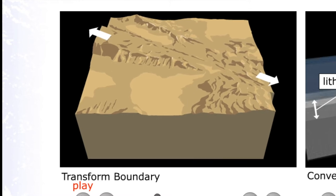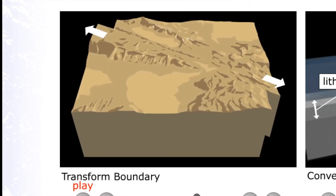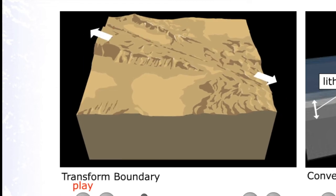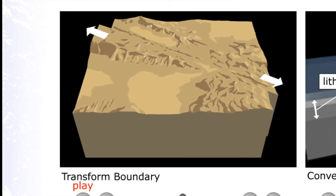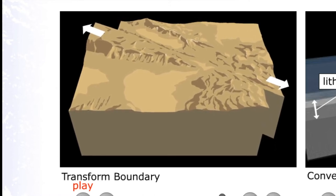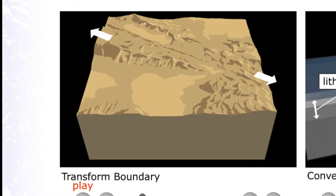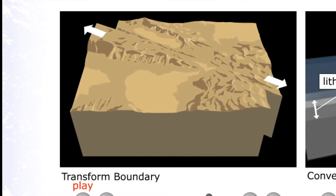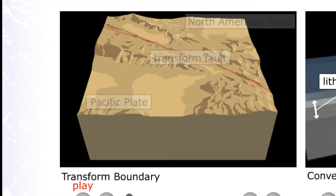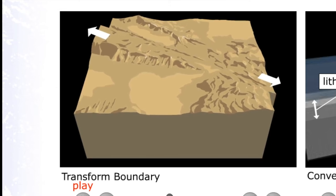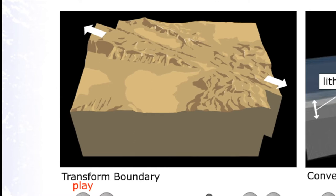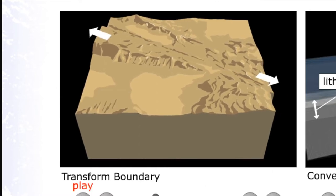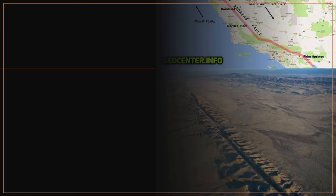For transform plate boundaries, like the San Andreas Fault, these are called conservative plate boundaries because no materials are being created or destroyed — they are conservative. These are characterized by plates sliding horizontally past each other, creating strike-slip faults. Earthquakes are also present in these regions as the plates are still moving.